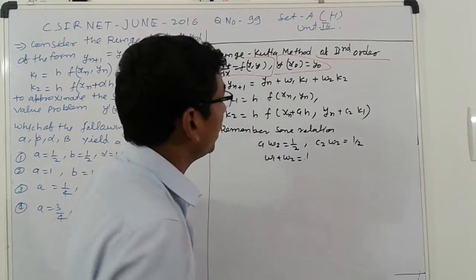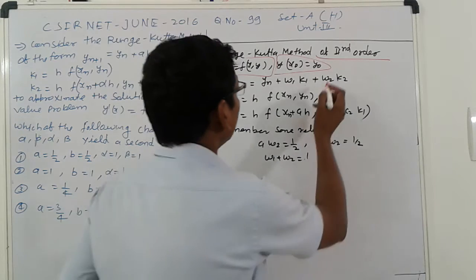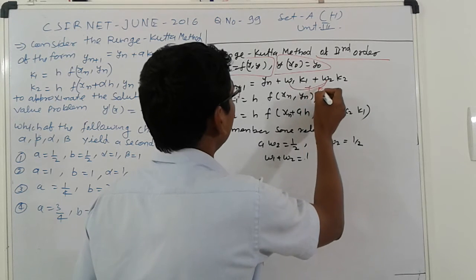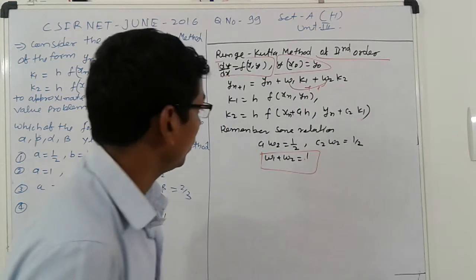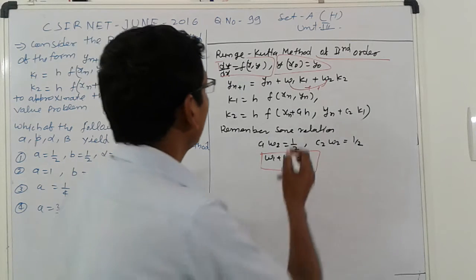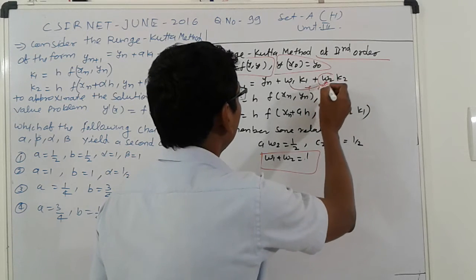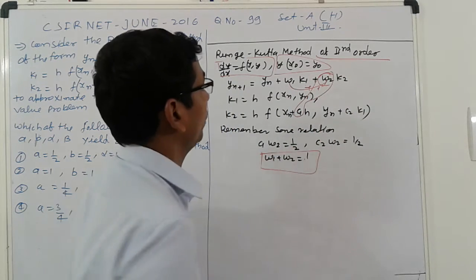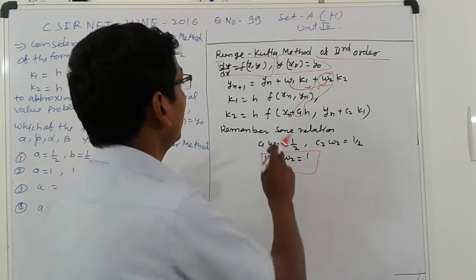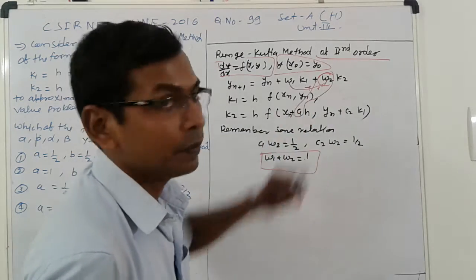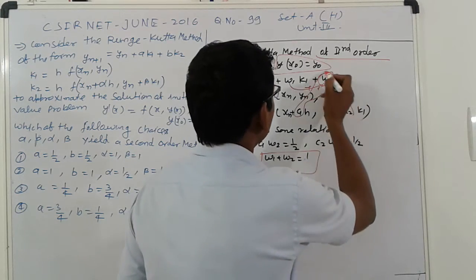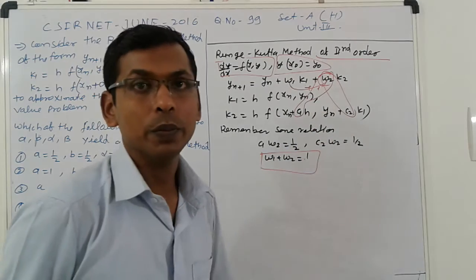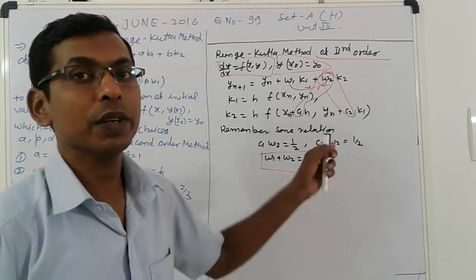What is the relation between them? Firstly, that term is c_1, w_1 plus w_2, that sum of this we get 1. So here w_1 plus w_2 is 1. Next, product of this means that term and that term, this is a constant. Product of this, c_1*w_2 is 1/2. That is the basic relation of Runge-Kutta methods.